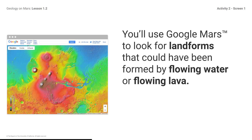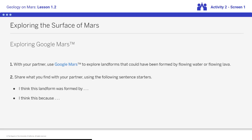On Mars, there are many volcanoes that have erupted in the past. Flowing lava can change the shape of the land in many ways that are similar to flowing water. As you explore Google Mars, you'll use these sentence starters to help you think about what you're seeing. You're not expected to be sure about how a landform was formed — you're just exploring and sharing initial ideas.